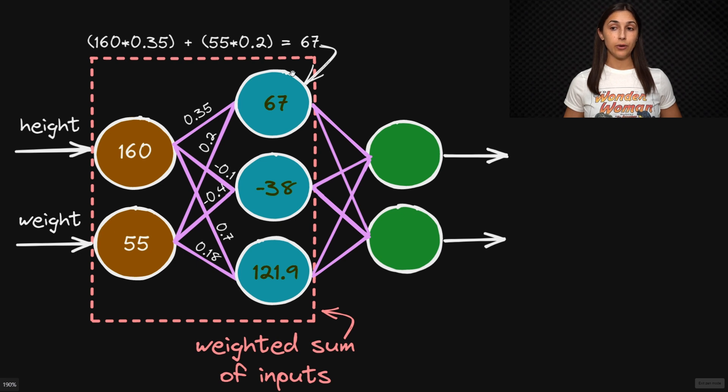So for this first node, for example, we have 160 multiplied by 0.35 plus 55 multiplied by 0.2, which gives us 67. As the output for this node, this weighted sum is considered the pre-activation output of this node.